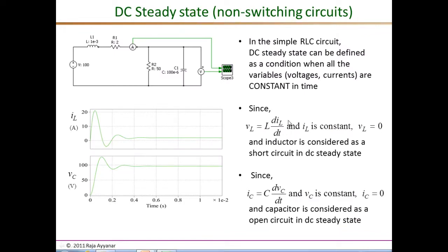Next we examine the important concept of DC steady state. To appreciate what DC steady state means in switching converters, let's first look at how it is defined in non-switching circuits. Consider a simple RLC circuit with no switching — initially with zero inductor current and zero capacitor voltage — then apply 100 volts at t equals zero.